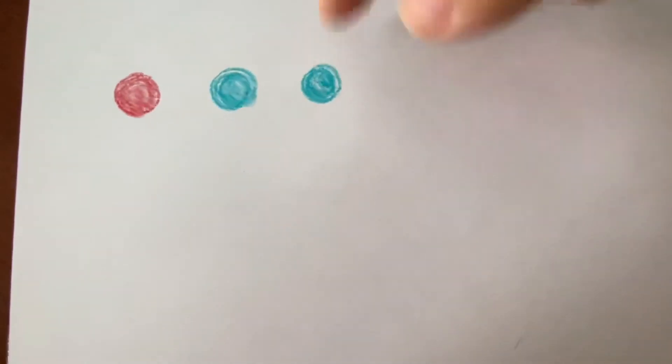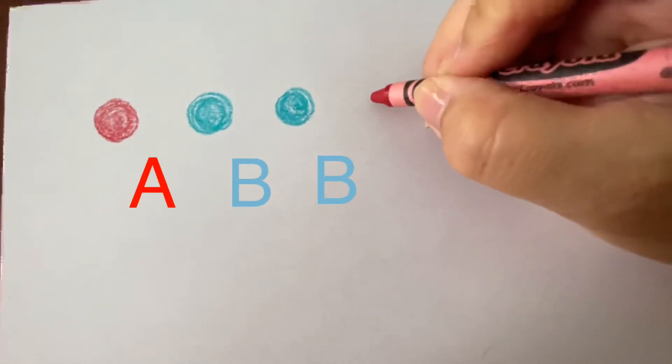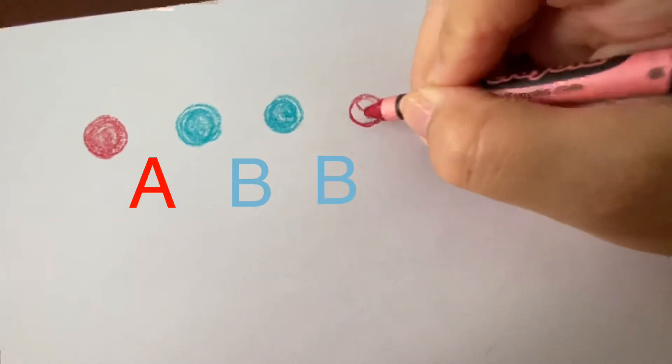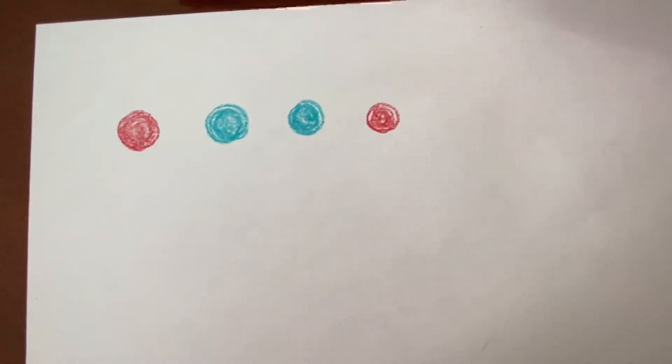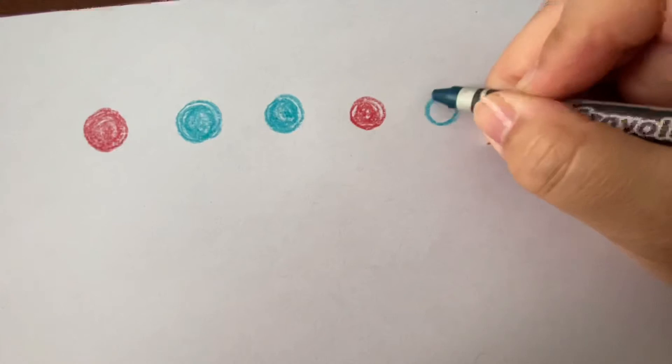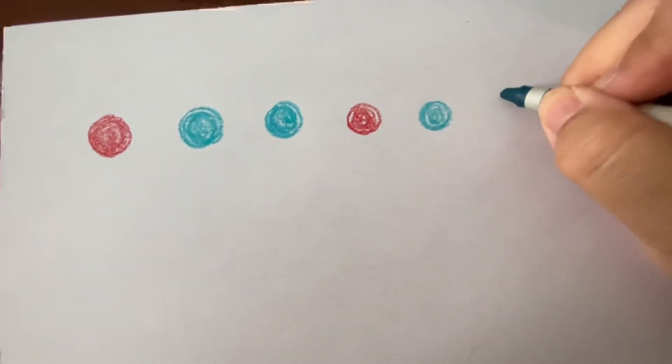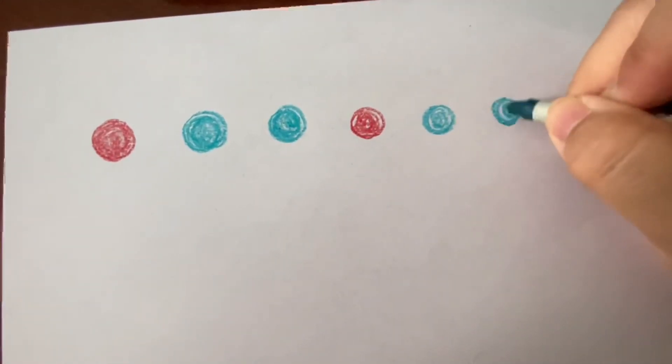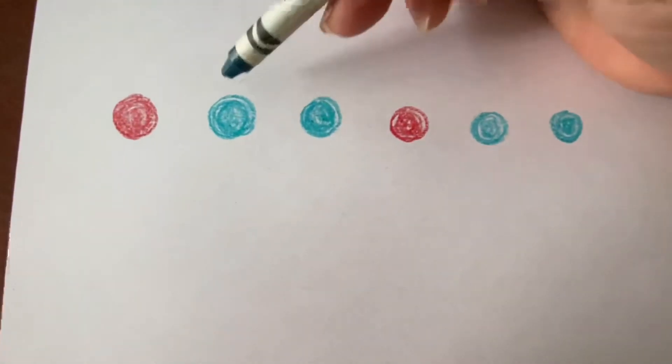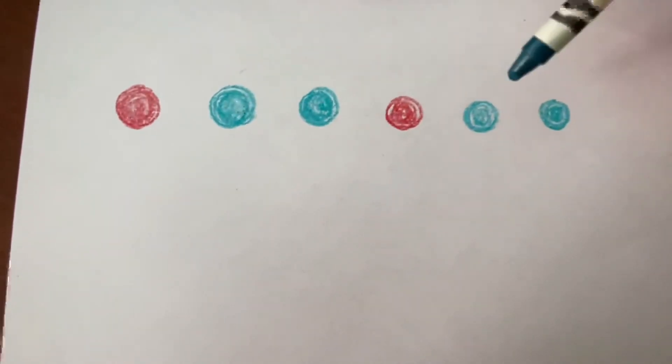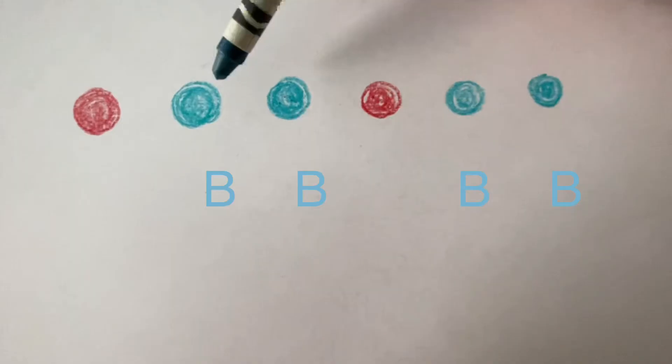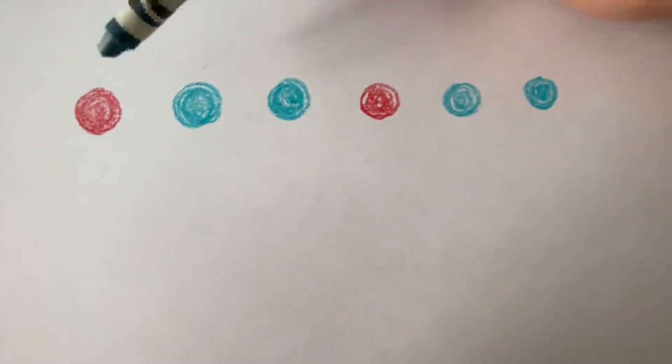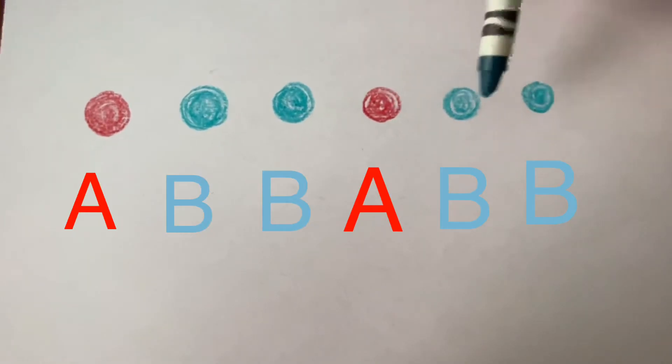So, this is an A-A-B-B pattern. Let's see if I can continue it. A. All the red circles are going to be the A-things. And now I'm going to do two more B-things. Remember, all of the blue circles are B-things. So, this is an A-B-B pattern. A-B-B, A-B-B.